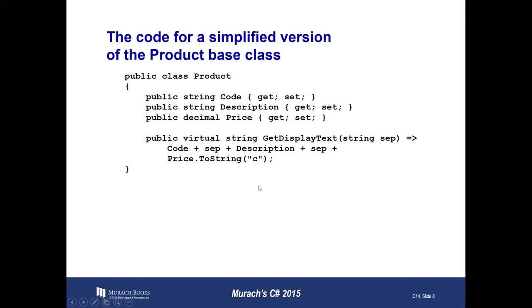This slide shows the code for a simplified version of the Product base class. Everything on Amazon, for example, is a product, but from there there are different types of products — software, books — that are more specific rather than generic. This base class is very generic: every product is going to have a display text, a code, a description, and a price. But then maybe when you retrieve a Software, you also want to know the version.